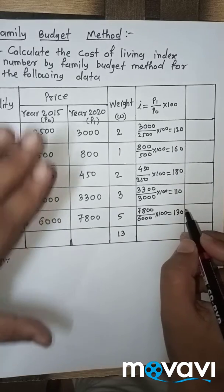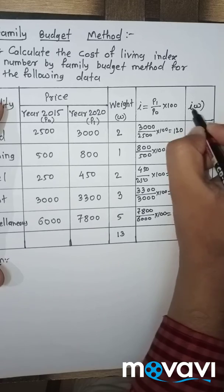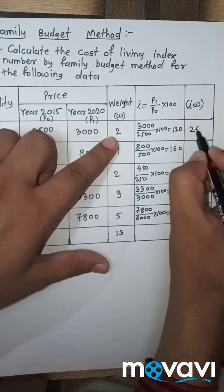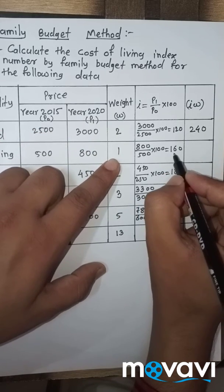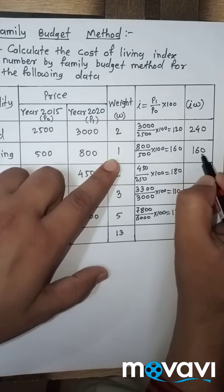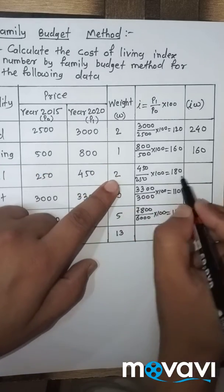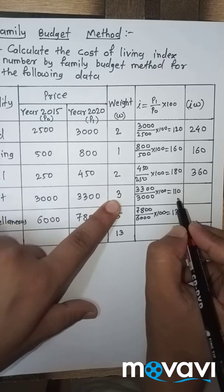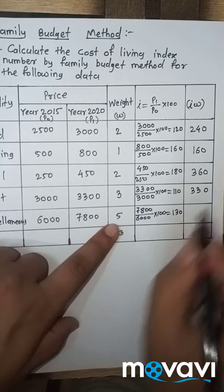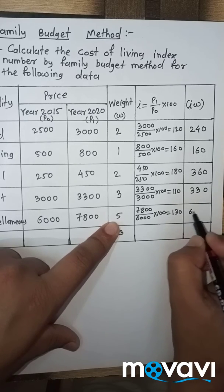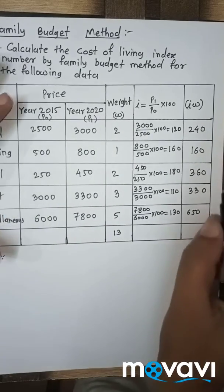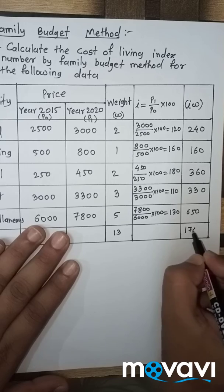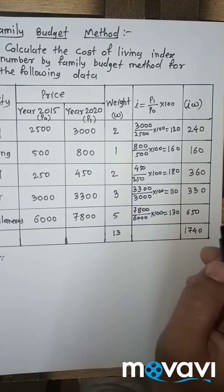Then we require I into W. W is 2, I is 120, so 2 into 120 is 240. W is 1, I is 160, product is 160. 2 into 180 is 360. 3 into 110 is 330. 5 into 130 is 650. Then if we calculate the sum we get total 1740.